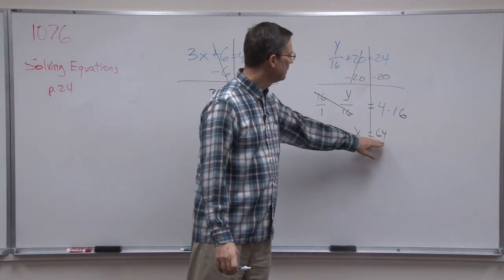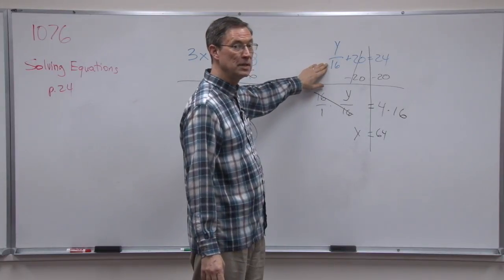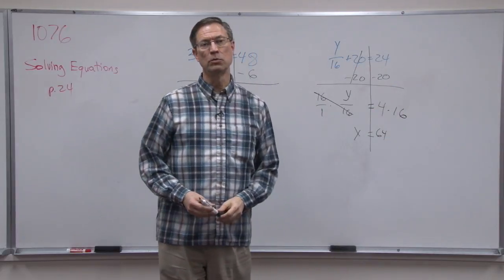And now I can take the 64, check it, put 64 up here. 64 divided by 16 is 4. 4 plus 20, it checks. It equals 24.